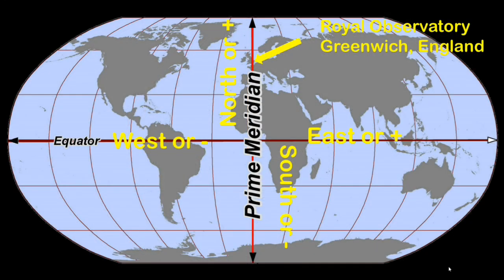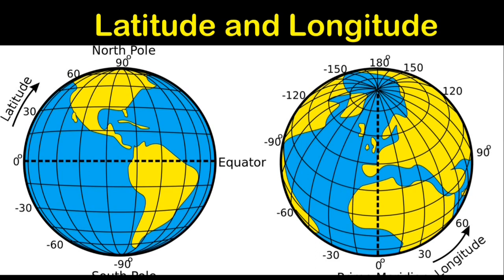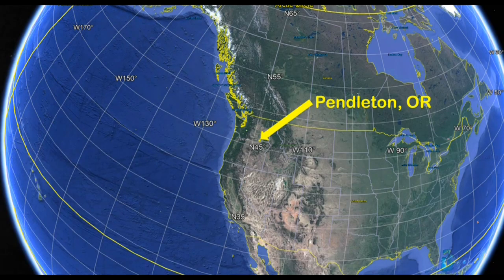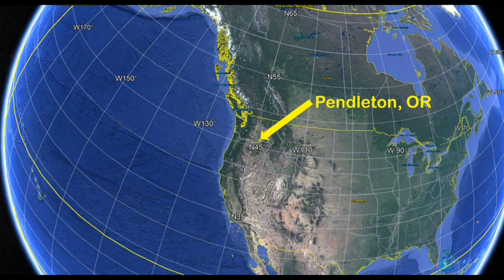Putting the geographical coordinate system together results in lines of latitude and longitude displayed as a grid. By convention, we measure up or down from the equator first and then east or west from the prime meridian. Positions are always reported as latitude first, longitude second. Using the system, we can precisely report the position of any location on Earth. If you figured 46 degrees north of the equator and 119 degrees west of the prime meridian for Pendleton, Oregon, you would be in the ballpark. The actual location is 45.67 degrees north and 118.78 degrees west, which is a great segue into latitude and longitude position formats.